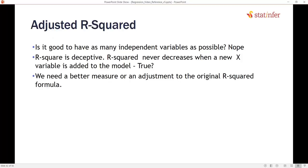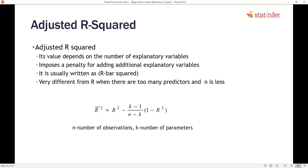So, we need a better measure or a slight adjustment to our R-square value. The original R-square value formula has some issues. What is that adjustment? That is nothing but adjusted R-square. Adjusted R-square is simply derived from R-square only. It just takes care of this specific issue.